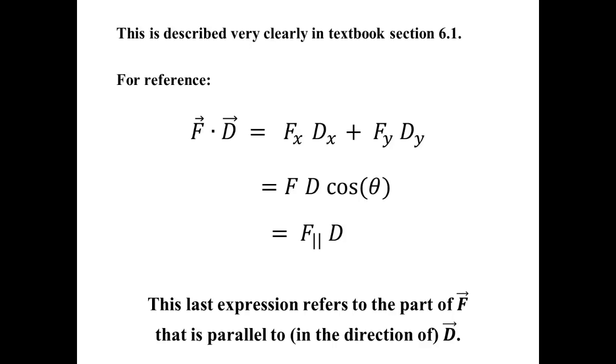It's also the magnitudes of the two vectors times the cosine of the angle between them, and that means it's actually the projection of one vector onto the other. So it can be viewed as being the part of F that is parallel to the motion, that is, to the displacement vector D.